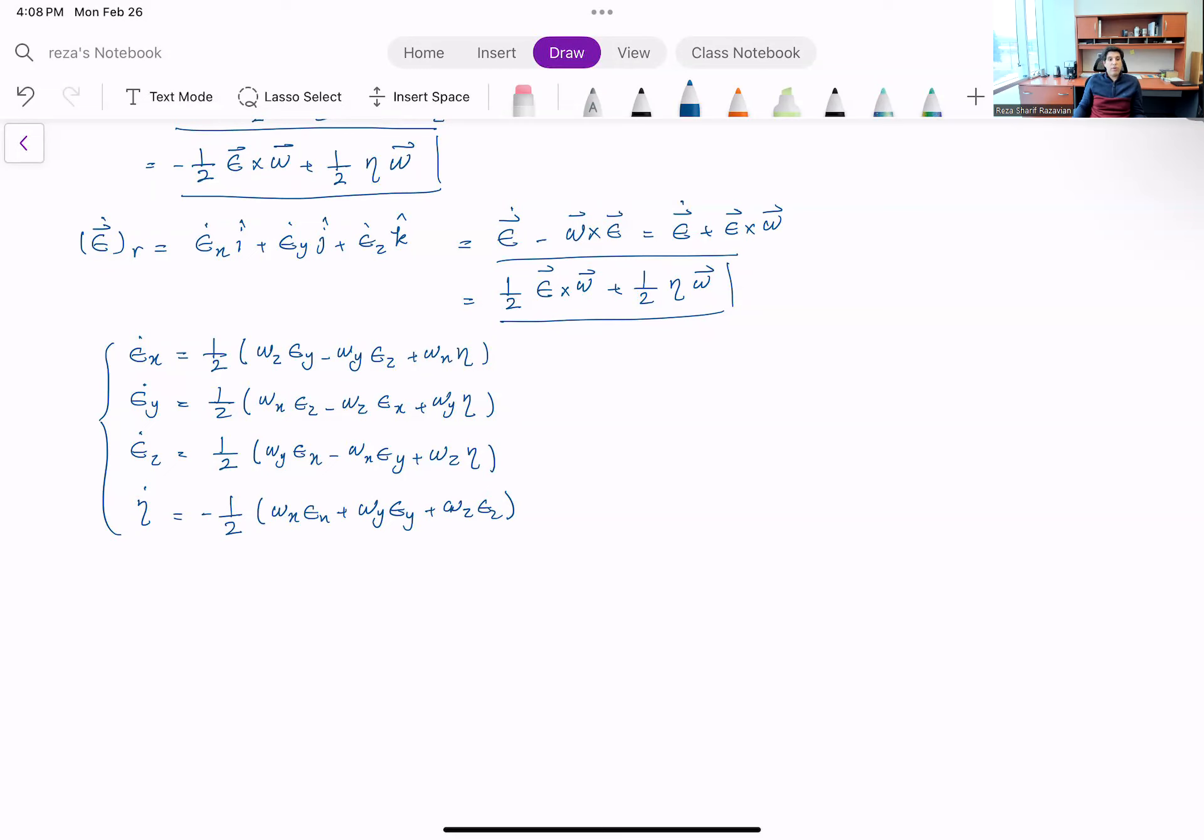Okay, so if I know my omegas, these are the rate of change of epsilon x, y, z and eta. So what is really significant and important and useful, extremely useful, is imagine you have a sensor that measures omega x, omega y, and omega z in the body fixed axis. That sensor exists, it's called a gyroscope. And it essentially exactly does that. So it sends out or measures the angular velocities along these three body fixed axes.